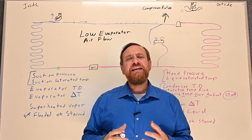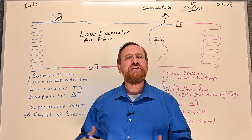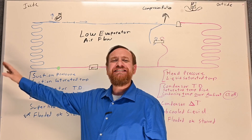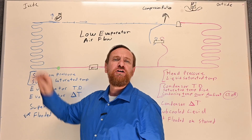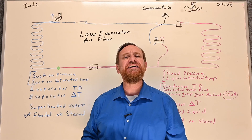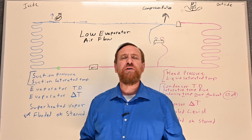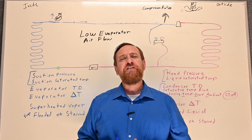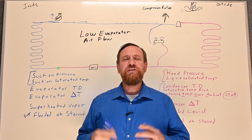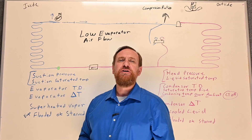We need to be thinking that the heat is in the air — the heat we're trying to absorb is in the air. So if I have less airflow across my evaporator coil, I also have less heat across my evaporator coil. That's key for us to understand. So what are some examples that can cause an airflow issue?